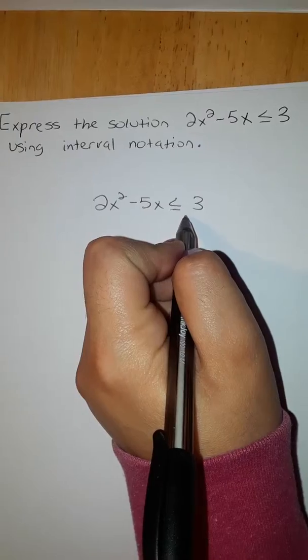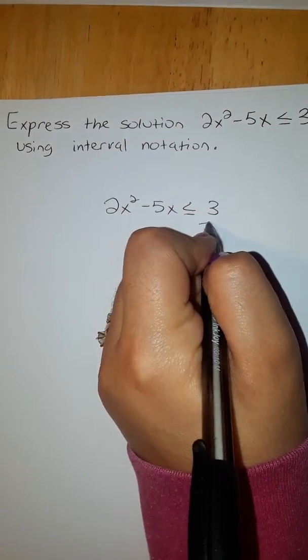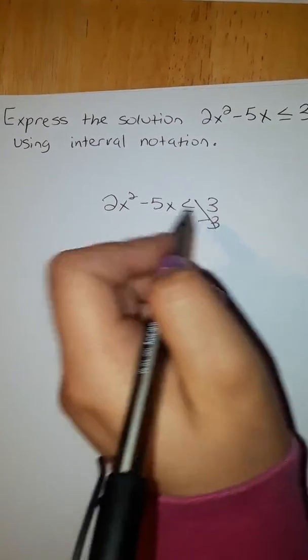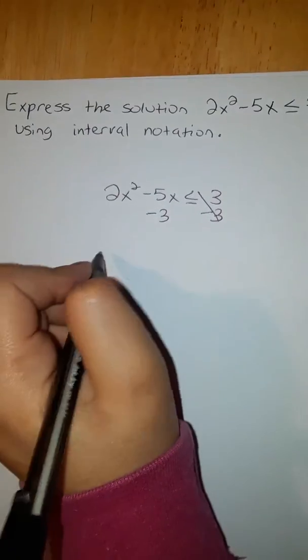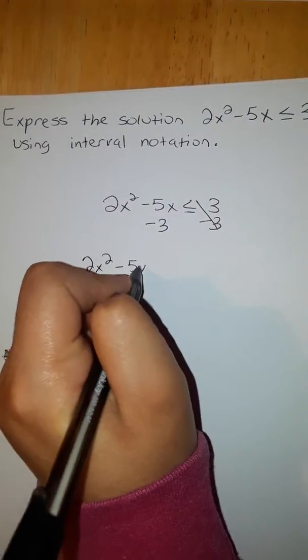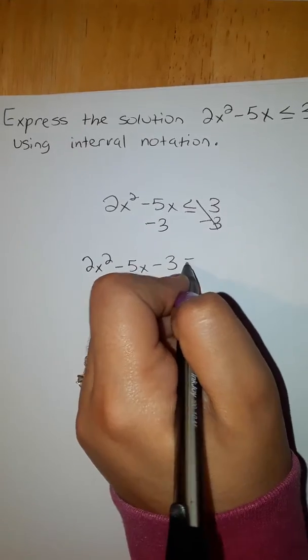First we're going to subtract 3. Now we're left with 2x squared minus 5x minus 3 is equal to 0.